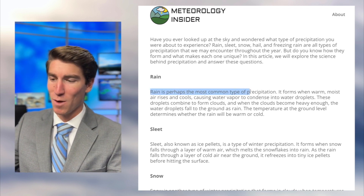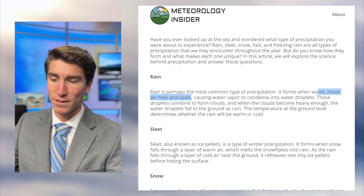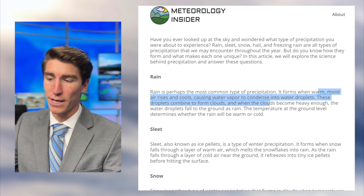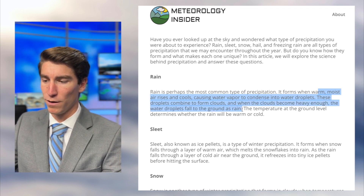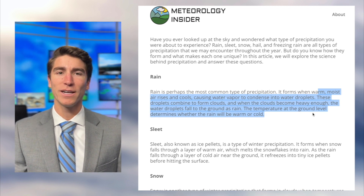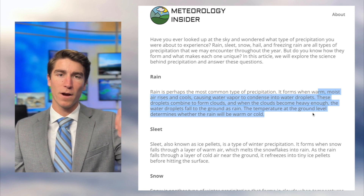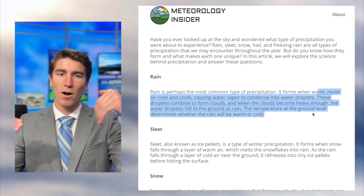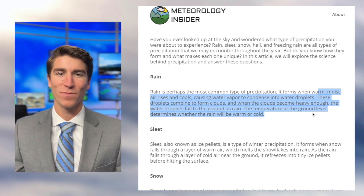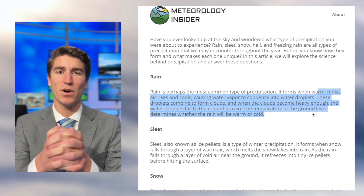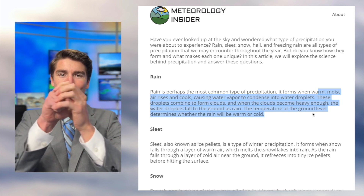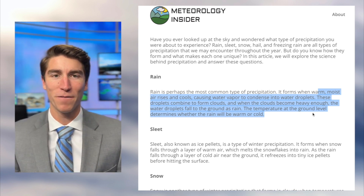Rain is perhaps the most common type of precipitation. It forms when warm, moist air rises and cools, causing water vapor to condense into water droplets. These droplets combine to form clouds, and when the clouds become heavy enough, the water droplets fall to the ground as rain. The temperature at ground level determines whether the rain will be warm or cold. This ties into cold fronts — cold air comes in with a steep boundary, pushing warm air up. As it rises and cools, it can't hold as much moisture, like squeezing a sponge. The droplets collide and combine until they're heavy enough to fall as raindrops.